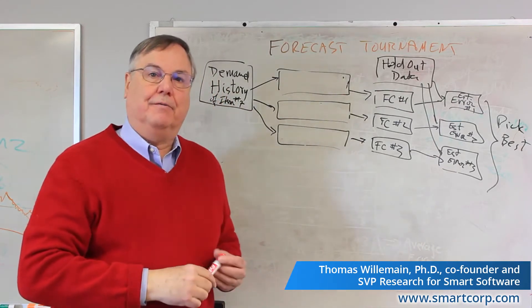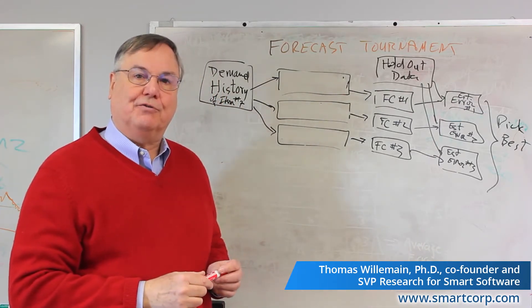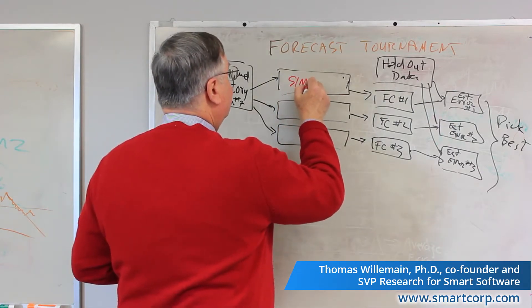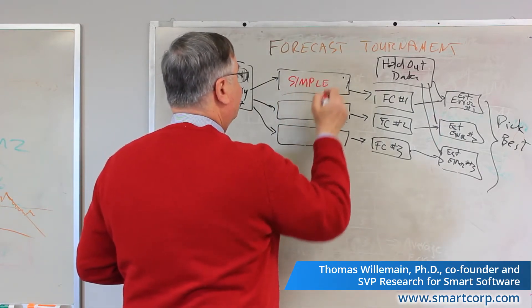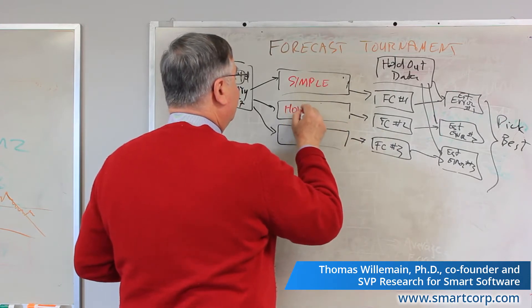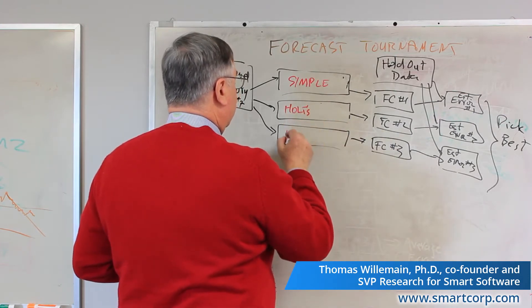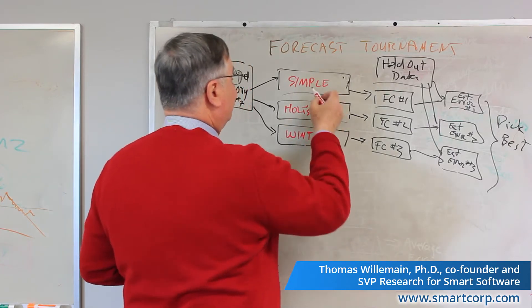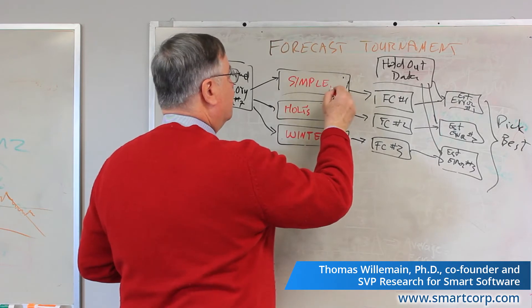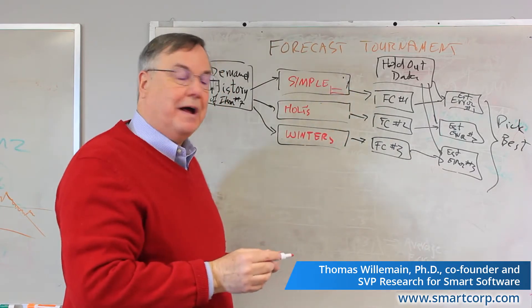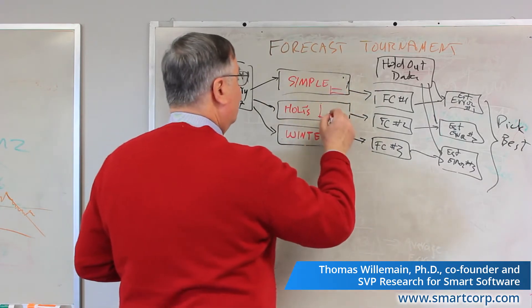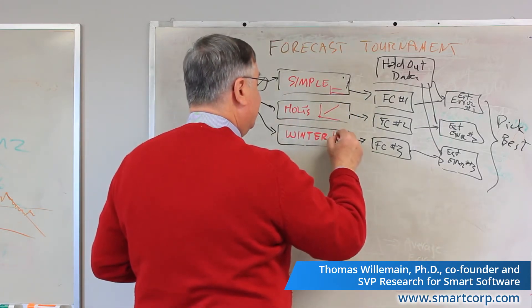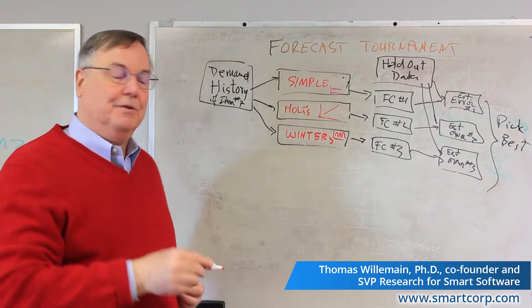If you caught the video blog about exponential smoothing methods, you'll remember that one of them was called simple or single exponential smoothing, another was called Holt, and another was called Winters. Simple exponential smoothing is for data series that are basically flat. Holt was for data series that have a trend, and Winters was for data series that are seasonal and have a cyclicity to them.